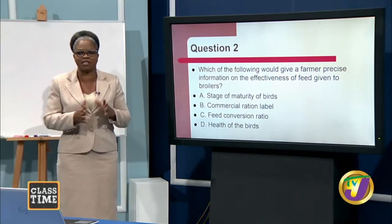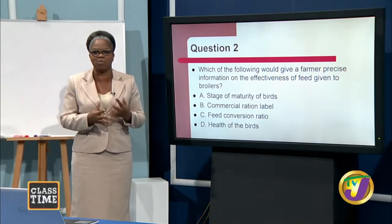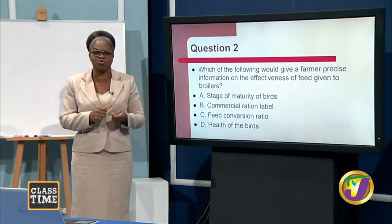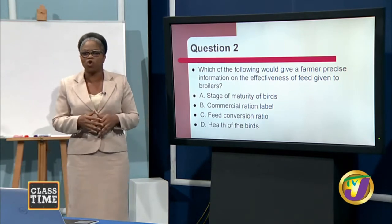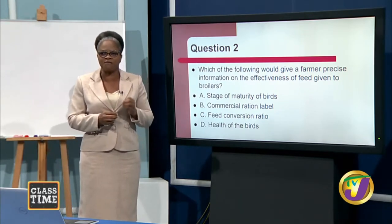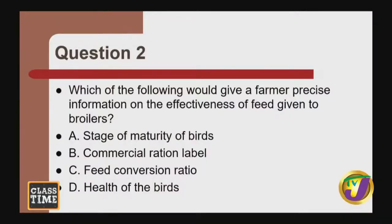Let us now recap with a multiple choice past paper question: 'Which of the following should give a farmer precise information on the effectiveness of feed given to broilers? A, stage of maturity of birds; B, commercial ration label; C, conversion ratio; D, health of the birds.' The answer is B — commercial ration label.